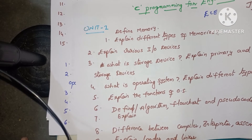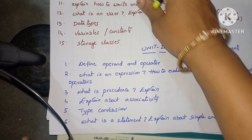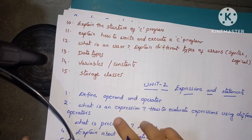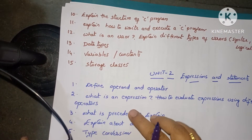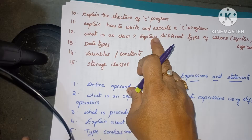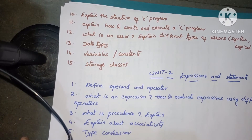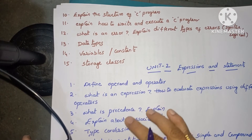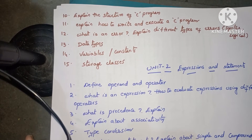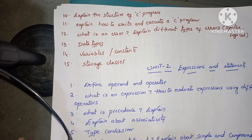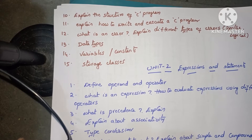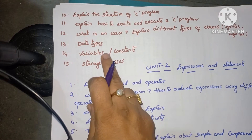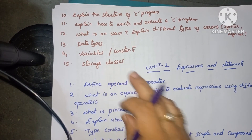Next: 'Explain the structure of a C program with example.' Also: 'How to create, write, and execute a C program?' and 'What are the steps involved in executing a C program?' Next: 'What is an error?' — explain different types of errors, or sometimes they ask specifically about syntax errors or logical errors. These are all essay-type questions.